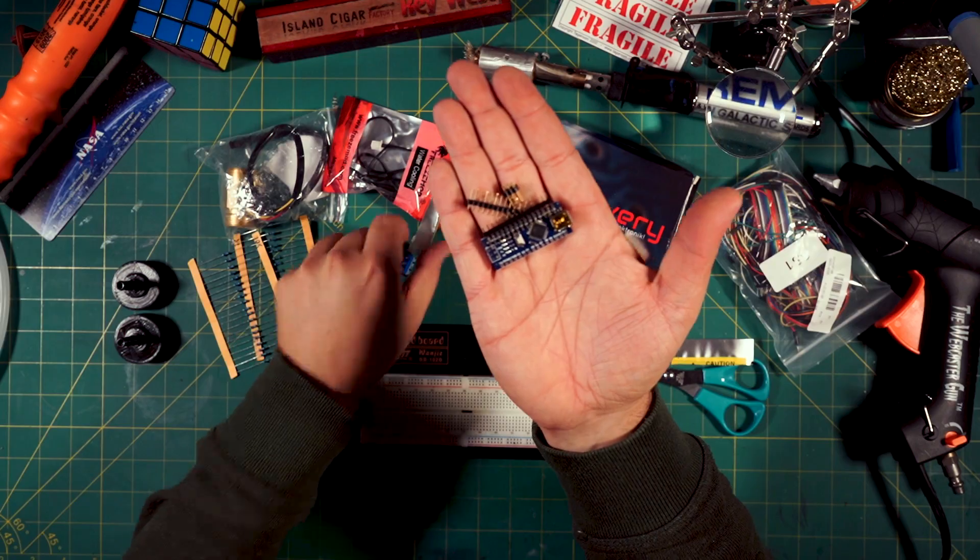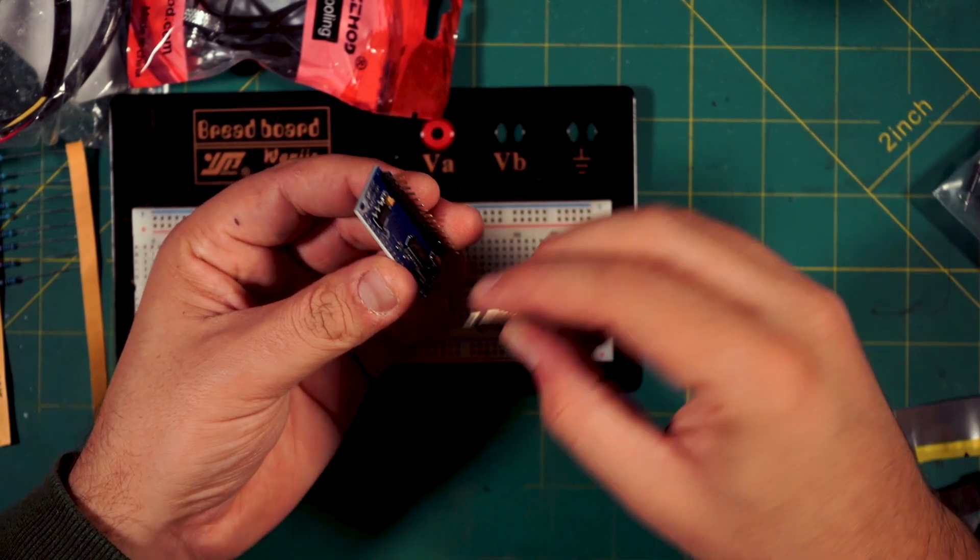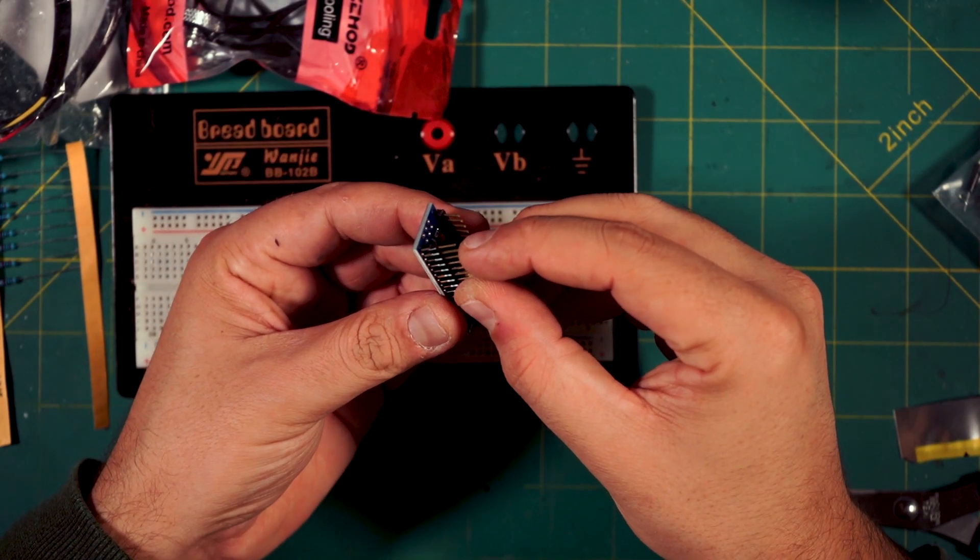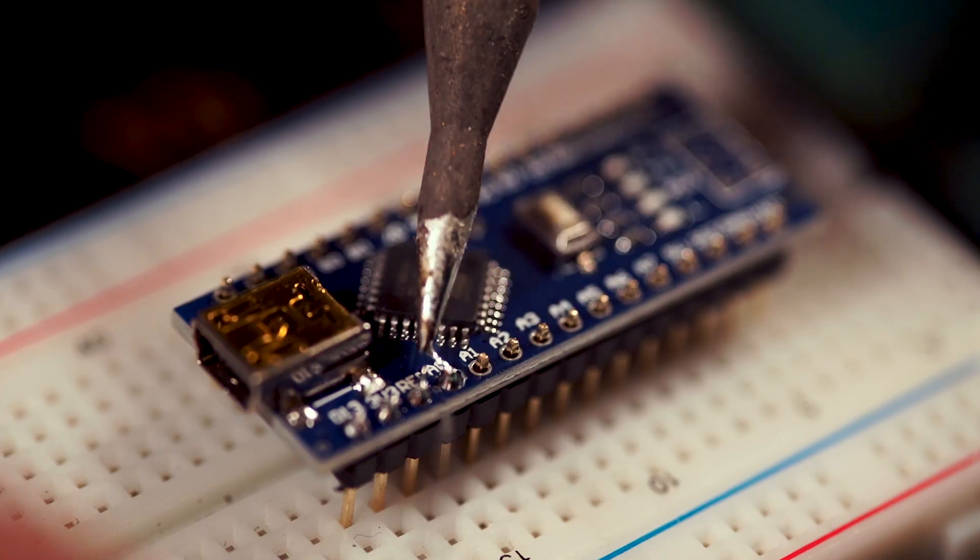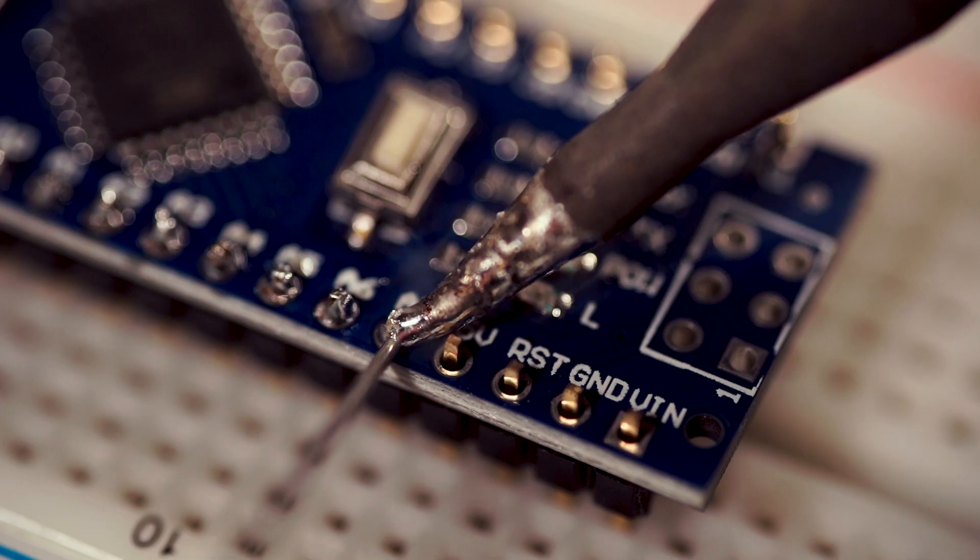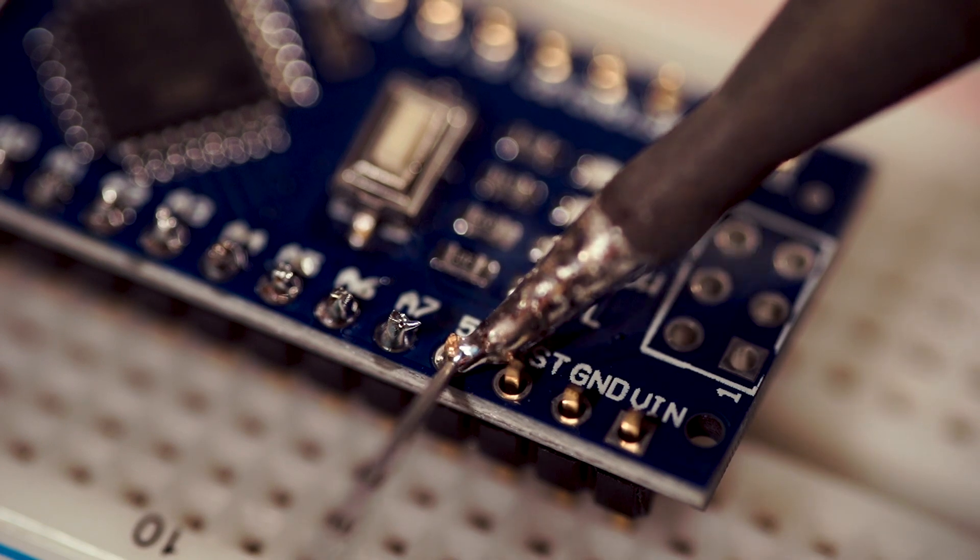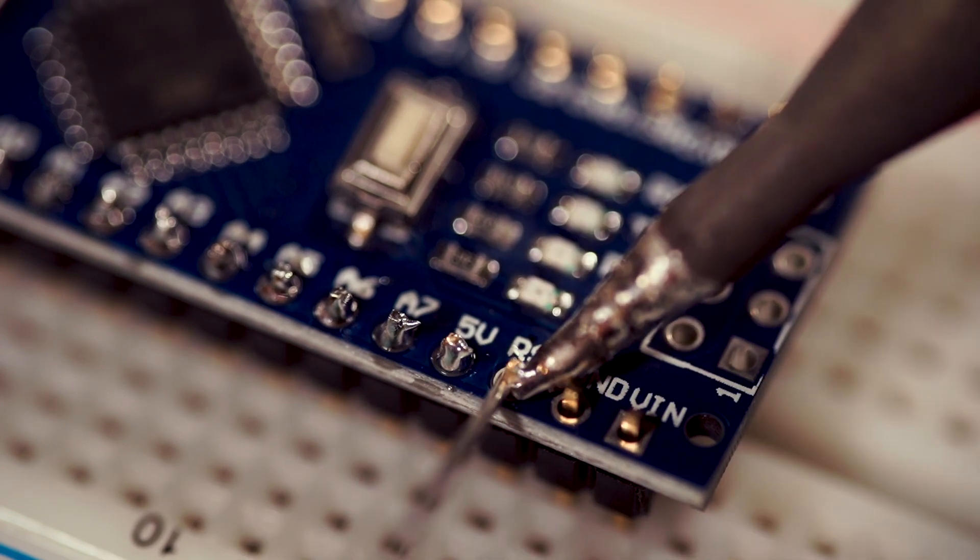So, these Arduino Nano boards come with those little headers here, and we have to solder this in place. So I clamp everything down into the breadboard and simply solder it. There is not much you can do wrong. The spacing and holes, they are all pre-made, so you just stick this together and solder it.